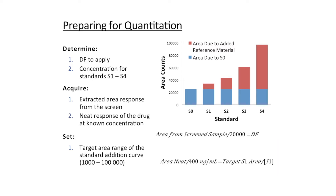In order to determine these two things, we need two pieces of information. One we already have from the screen: the extracted area of response of the drug before it's diluted — that is the area from the screen sample.